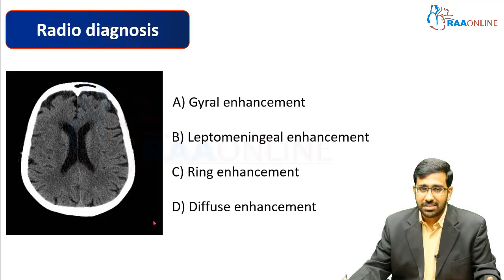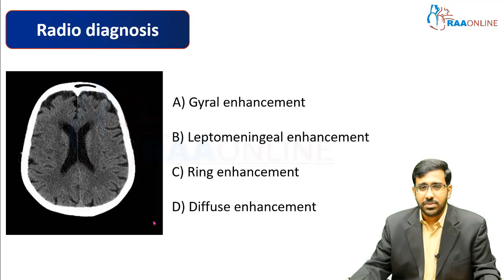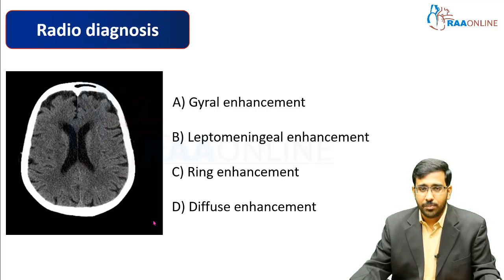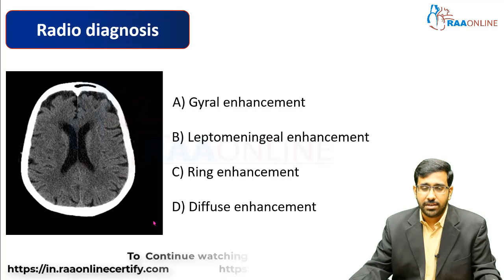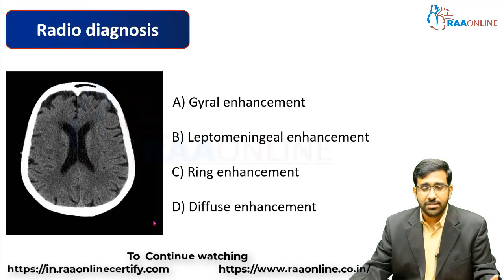Moving on to radio diagnosis: whenever we have a patient with a CNS history and a history of infection, we go to non-invasive investigations. The radiological imaging can be either CT or MRI, which gives us an idea about the involvement of the brain. Findings can include gyral enhancement, leptomeningeal enhancement, ring enhancement, or diffuse enhancement — with or without additional findings — suggestive of meningitis or encephalitis.